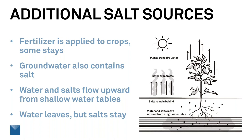Over-irrigation brings the water table to the surface more rapidly and is one of the main causes of salinization in irrigation projects — this was the source of the salt I saw in Yinchuan. Drainage systems can drop the water table and mitigate this problem, but it's better and cheaper to just avoid it through proper irrigation in the first place.